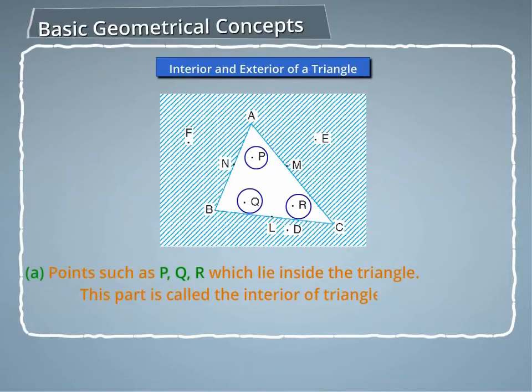Points such as P, Q, R which lie inside the triangle. This part is called the interior of triangle ABC.